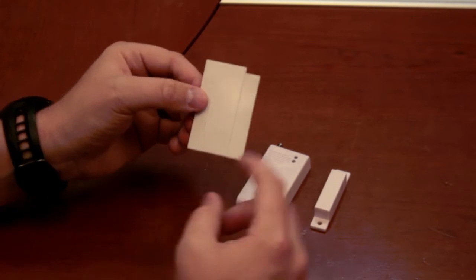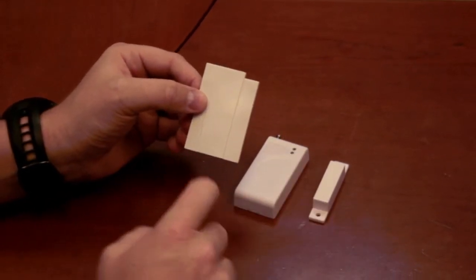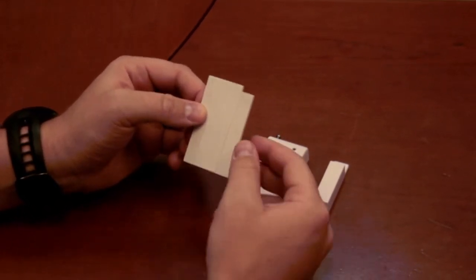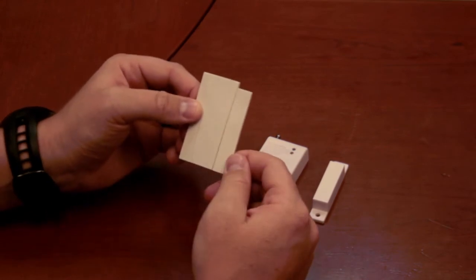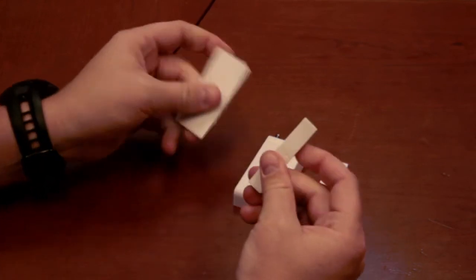Here's what the self-adhesive tape looks like. One side is for the magnet and the bigger part is for the transmitter. You see a little pre-done cut line in there. Go ahead and peel away the smaller part.